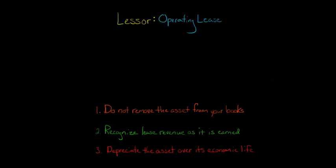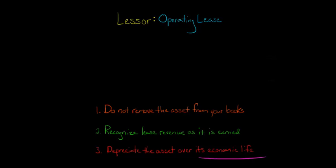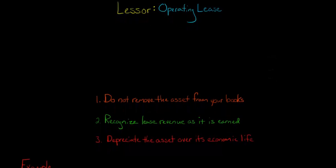Now, over time, even though you don't remove the asset from your books, you are going to depreciate the asset if it is a depreciable type of property. You'll depreciate it over its economic life, which may be different than the lease term itself. The economic life might be 20 years, whereas the lease term is two years. So you want to depreciate it over the asset's actual economic life because you haven't gotten rid of the asset — it's still on your books.